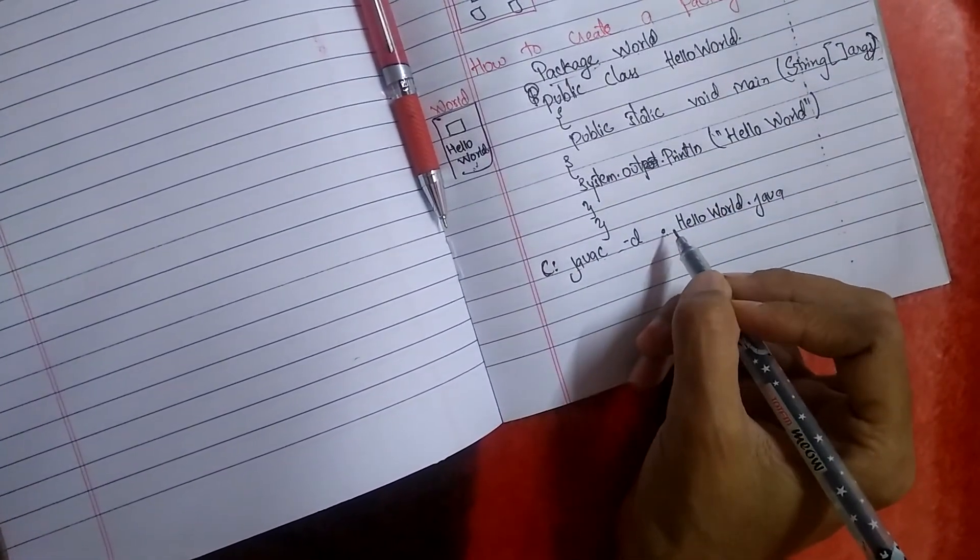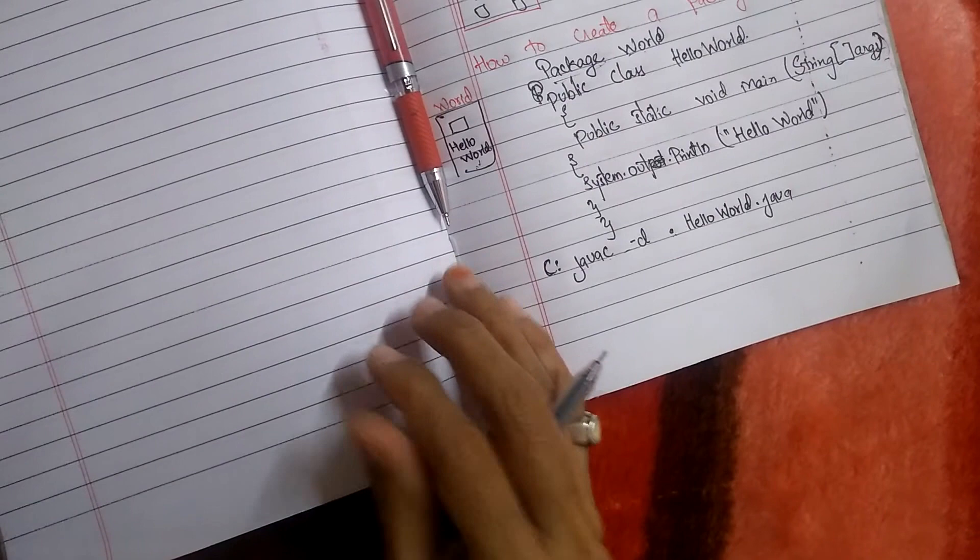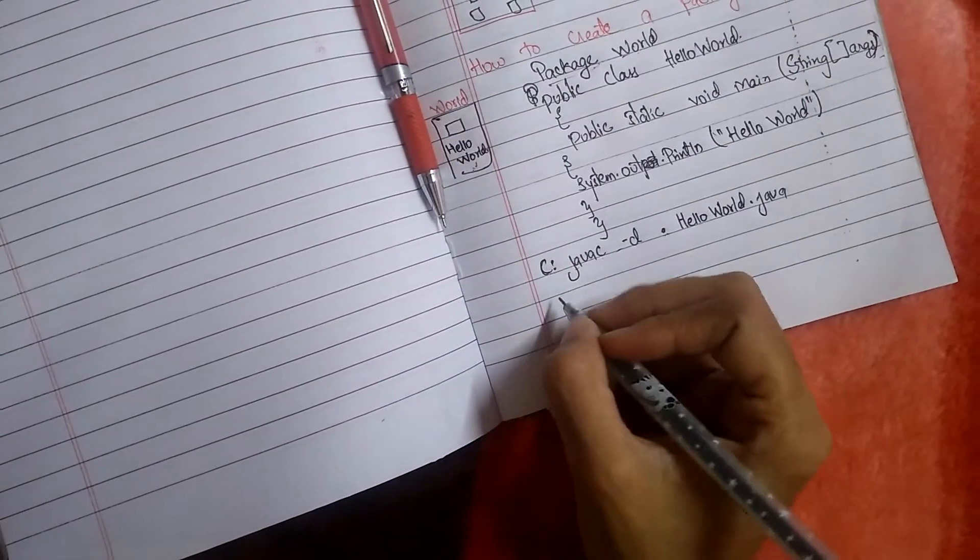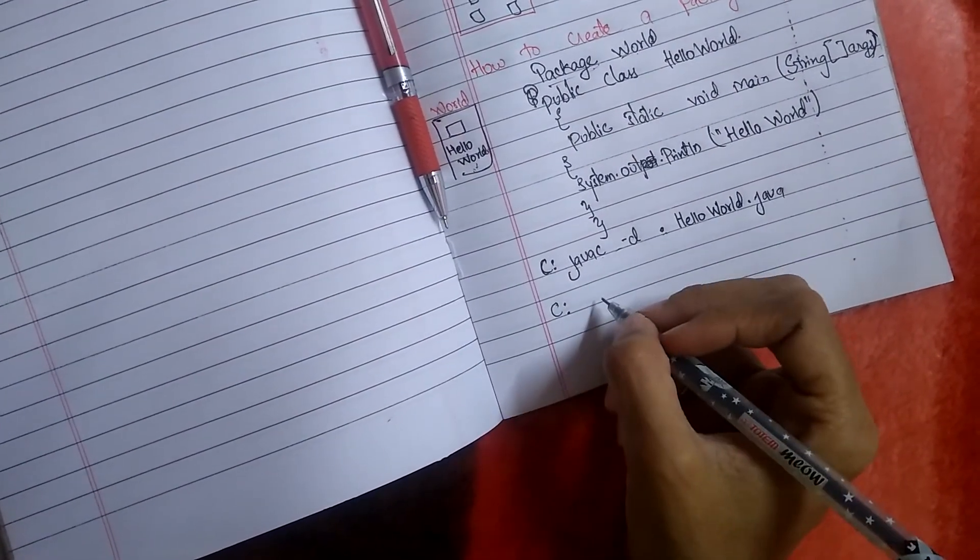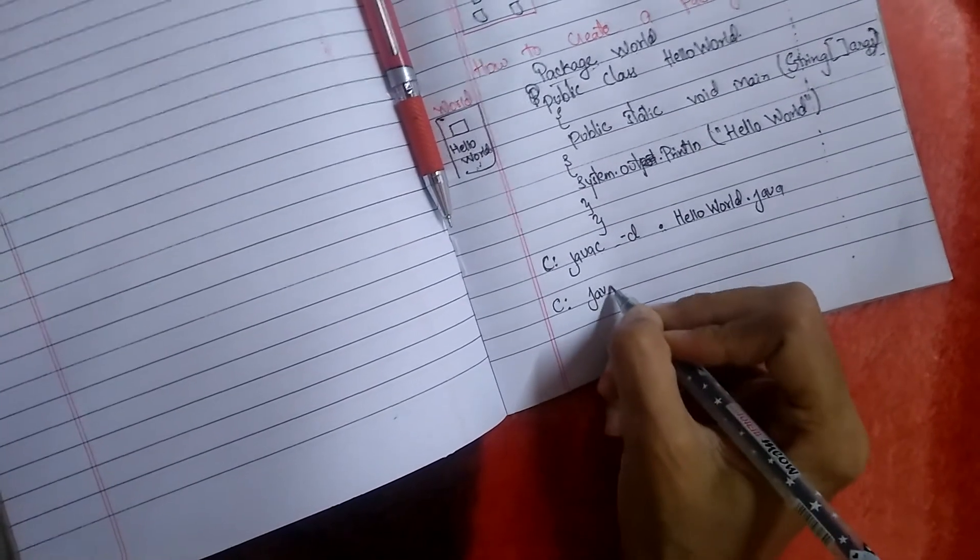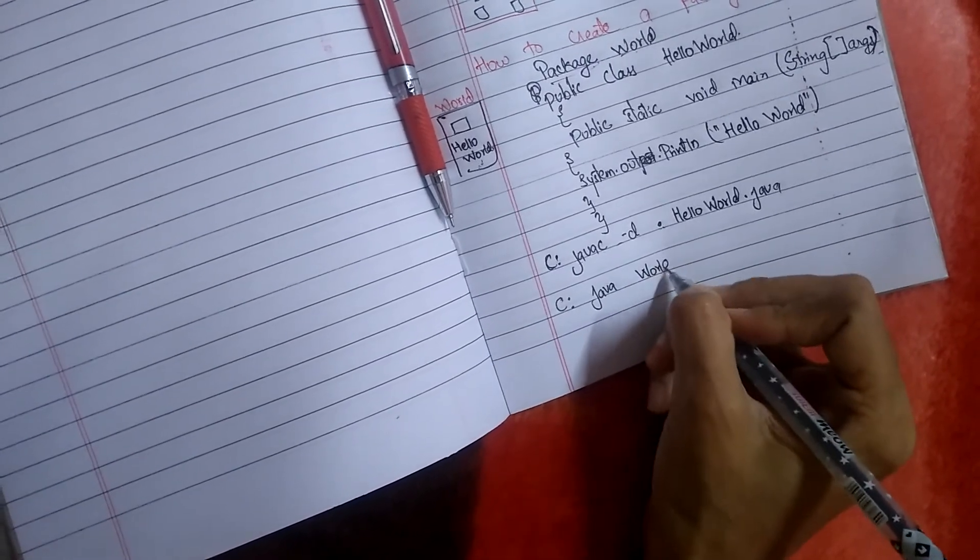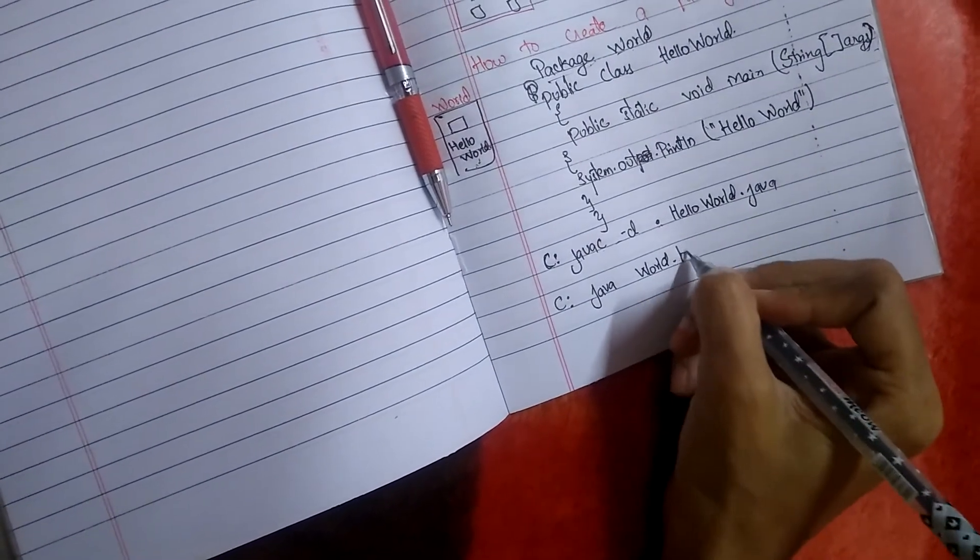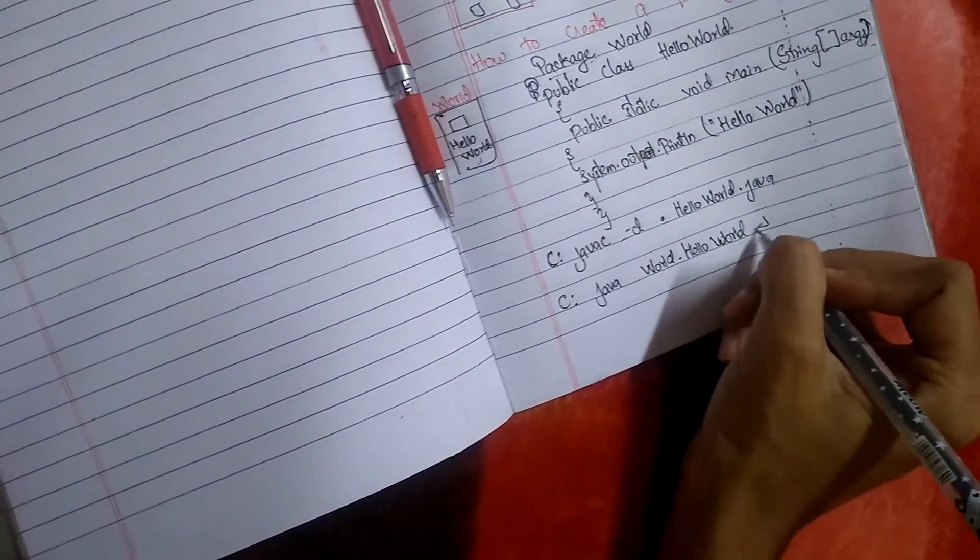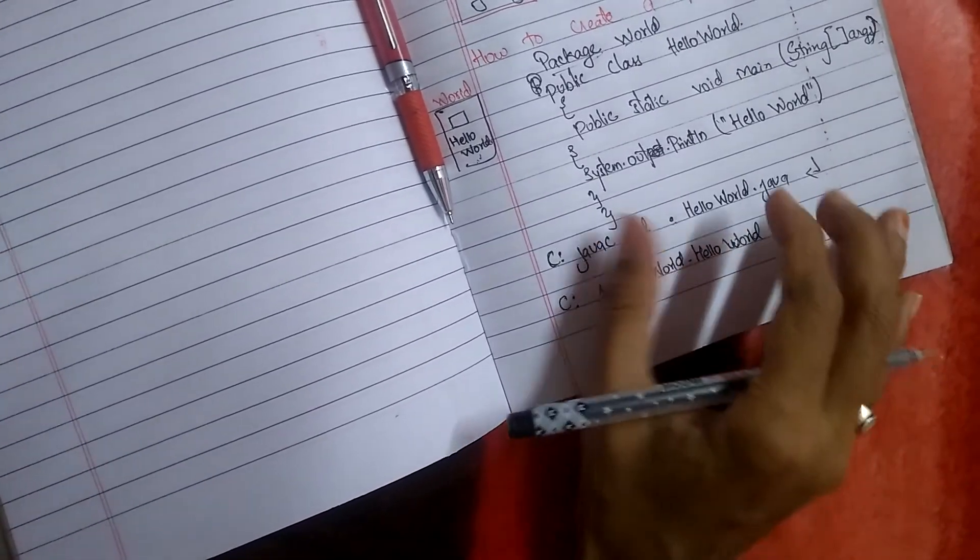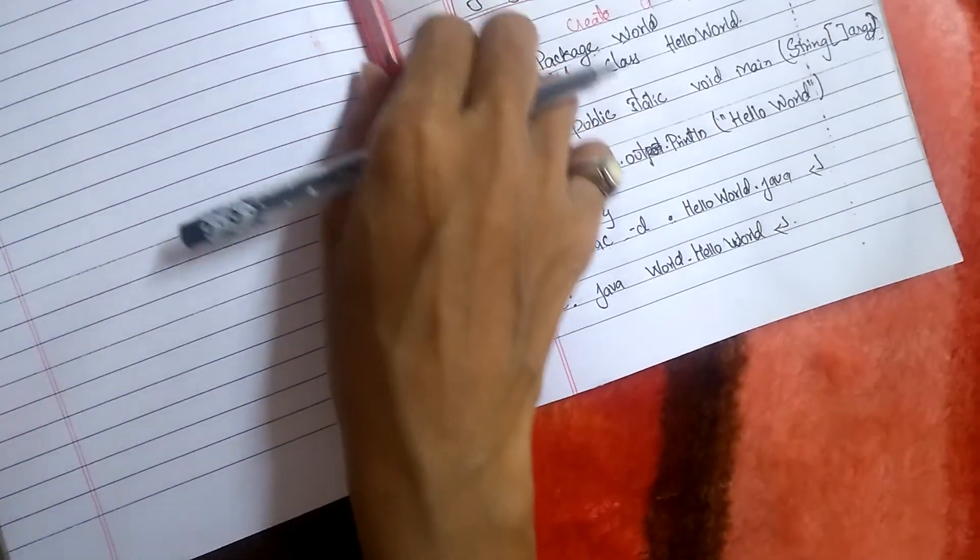This is how we are going to compile. To run the file, what we have to do is: java world.HelloWorld and press enter. This is how we are going to create package, compile the package, run a package. Thank you.